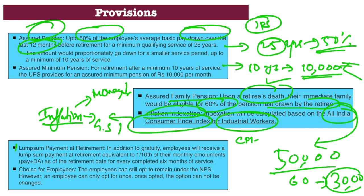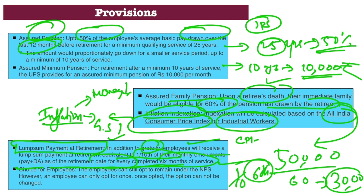The next important provision is the lump sum payment at retirement. Apart from the gratuity, employees will also receive a lump sum amount equivalent to one-tenth of their monthly emoluments — basic plus dearness allowance — for every completed six months of service as on the retirement date.